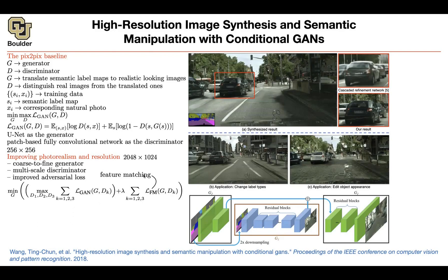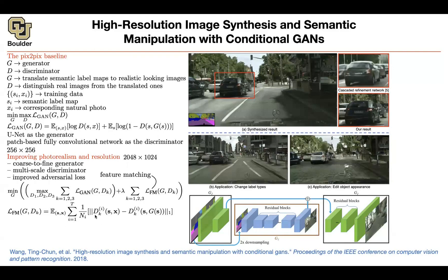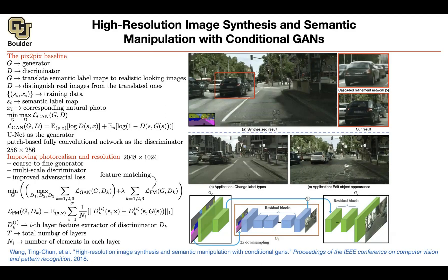And then we learned about feature matching before. Rather than looking at the final output of your discriminators, you can look at the feature maps at some intermediate layer and put an L1 loss there. So the techniques we learned previously are actually helping us here. This is the feature matching loss function. You cut your discriminator at some layer and use the activations at that layer. You compute the L1 norm rather than L2 norm, because L1 norm is less sensitive to outliers. T is the total number of layers up to that point of your discriminator, and I is the number of elements in each layer — the number of pixels.